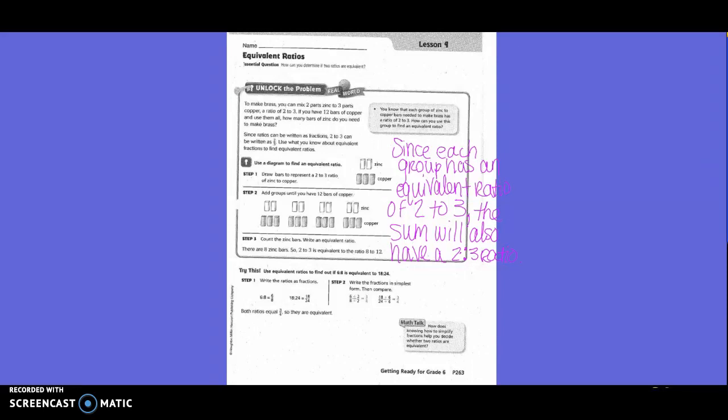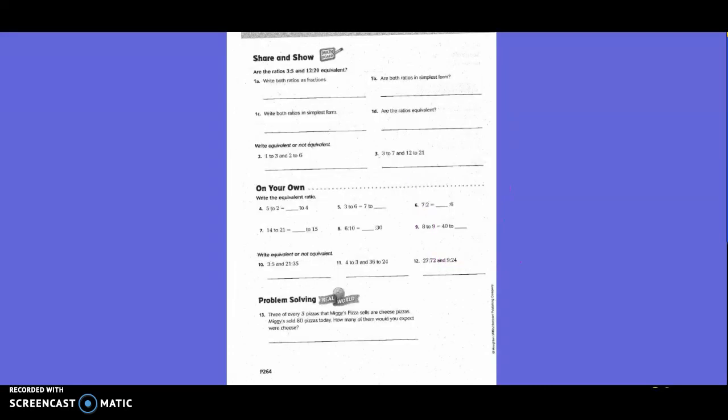Try this: use equivalent ratios to find out if 6:8 is equivalent to 18:24. Write the ratios as fractions - six to eight as six over eight, and 18 to 24 as 18 over 24. The simplified fraction of six-eighths is divided by two to get three-fourths, and 18 over 24 divided by six gets three-fourths. You could also say six times three equals 18, and eight times three equals 24 - so they are equivalent ratios.